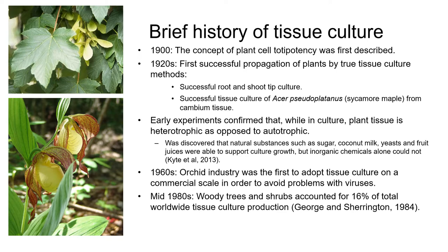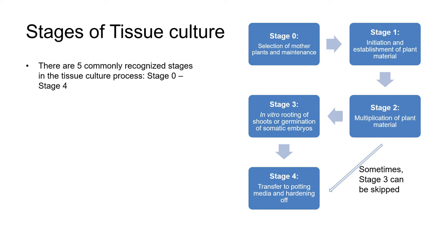So let's take a look now at what's involved in tissue culture. There are five commonly recognized sequential stages in the tissue culture process. They're numbered zero through four and we're going to take a quick look at each of these stages. In many ways these stages are very similar to some of the steps we've already looked at for propagating plants from stem cuttings. It's just that in tissue culture everything is on a much smaller scale and done in a lab instead of the greenhouse.